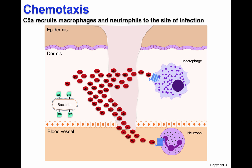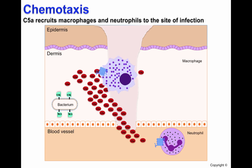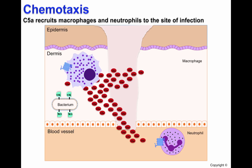Macrophages possess the C5A receptor and, upon binding of C5A, will follow the gradient to the site of infection. Neutrophils will do the same.